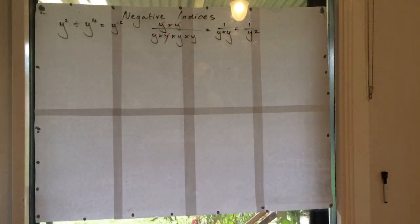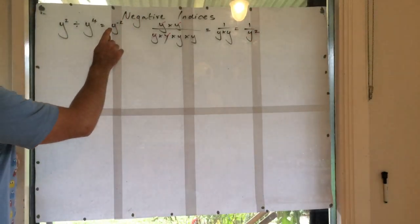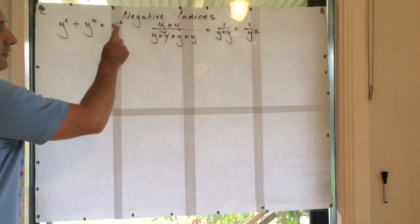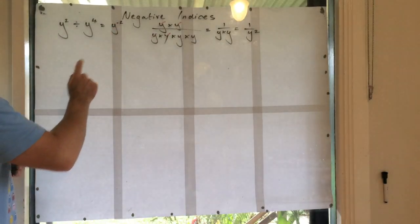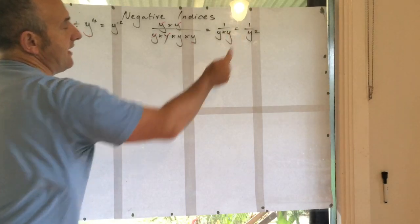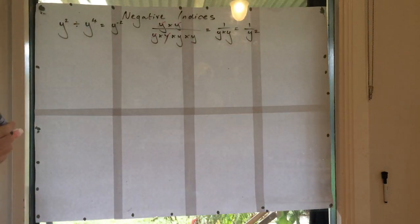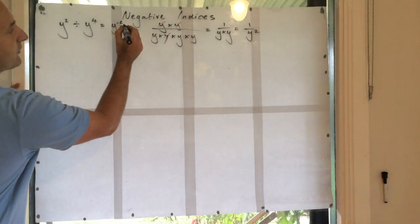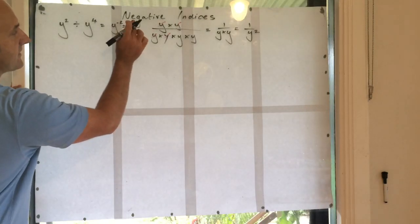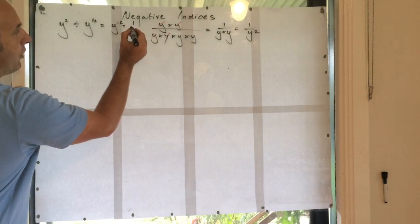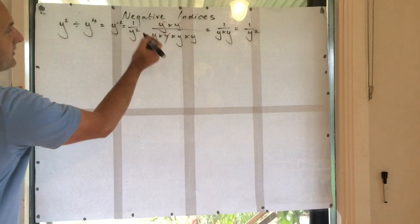So what we can say is that when we've got negative power, what we can do is if we move it from the numerator down to the denominator, it becomes a positive power. So likewise here, this is the same as 1 over y squared.